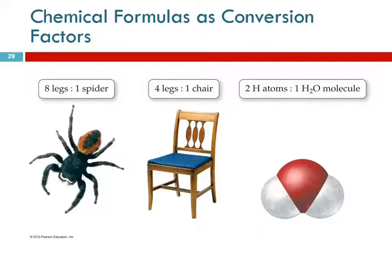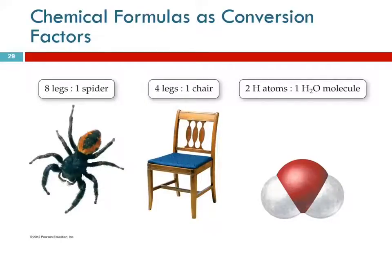How many legs does a chair have? Four. Did your mom ever ask you that? You're tipping back on your chair at the dinner table — how many legs does a chair have? Four. I'm going to sit it down, because you're supposed to have your chair on all four legs. A chair has four legs. That's a conversion factor.